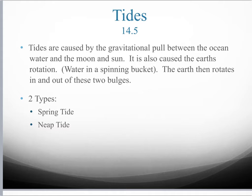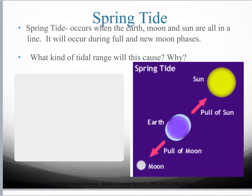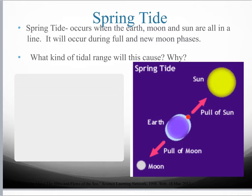We have two main types of tides: spring tide and neap tide. A spring tide occurs when the Earth, moon, and sun are all in a straight line. This can occur during a full moon, as shown in this diagram, but it can also occur at a new moon phase. The blue area on the outside represents the high tide — one high tide center here and another high tide center opposite. In between, we would have a low tide here and a low tide there.